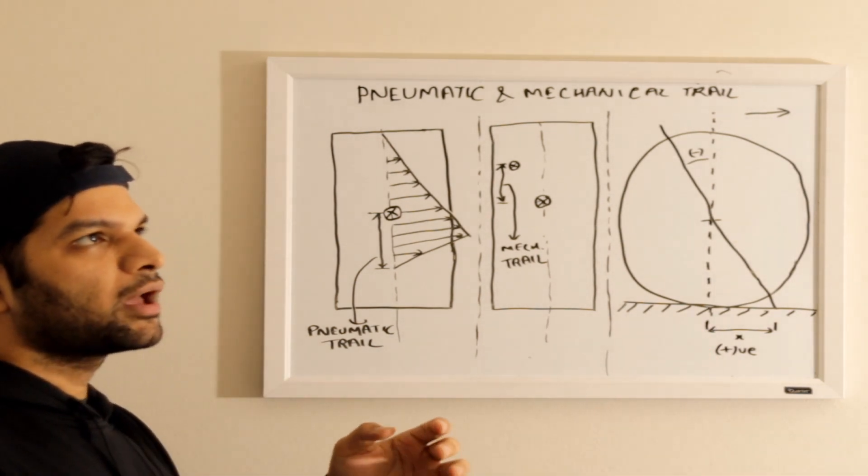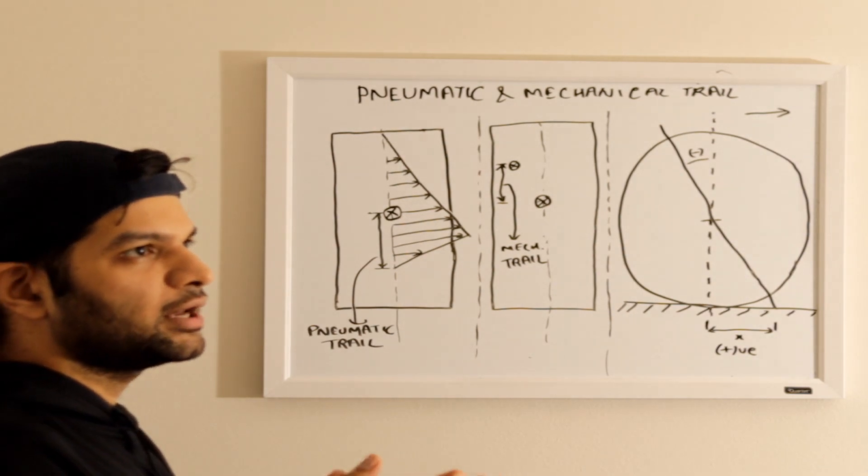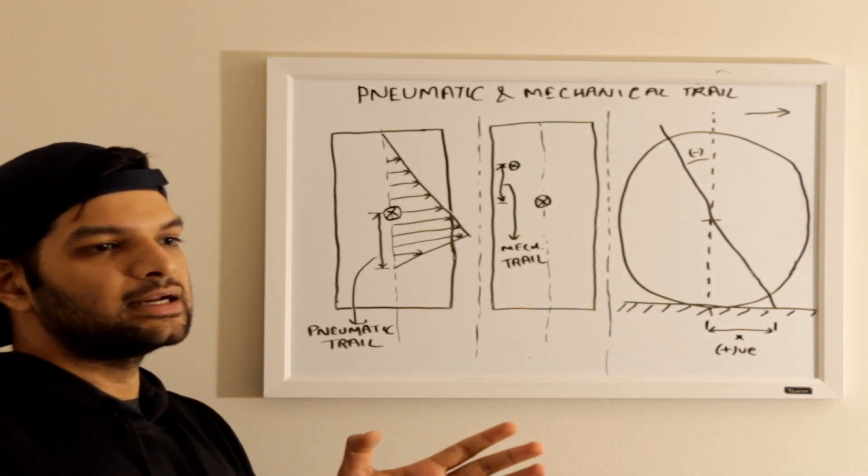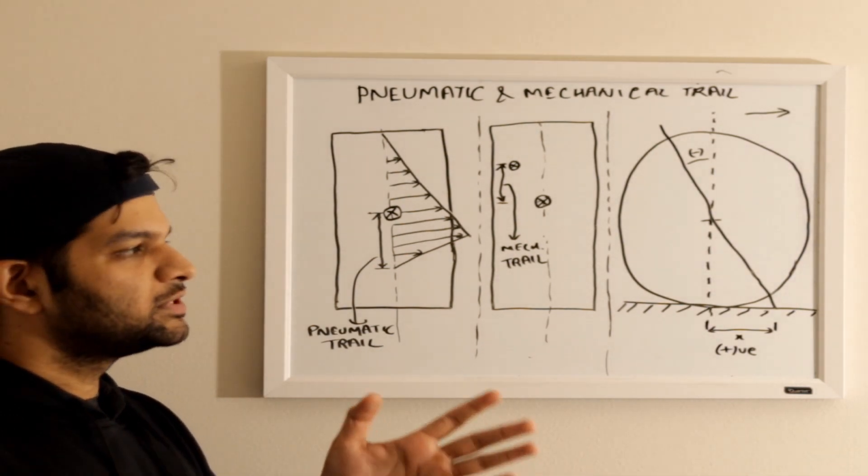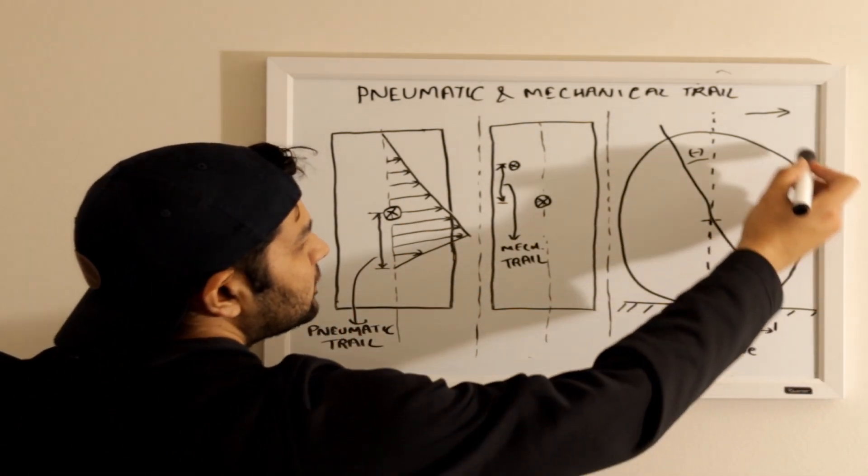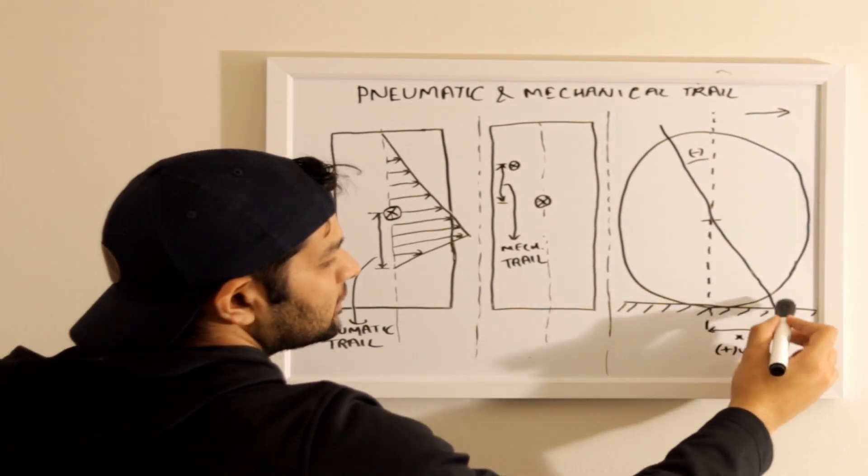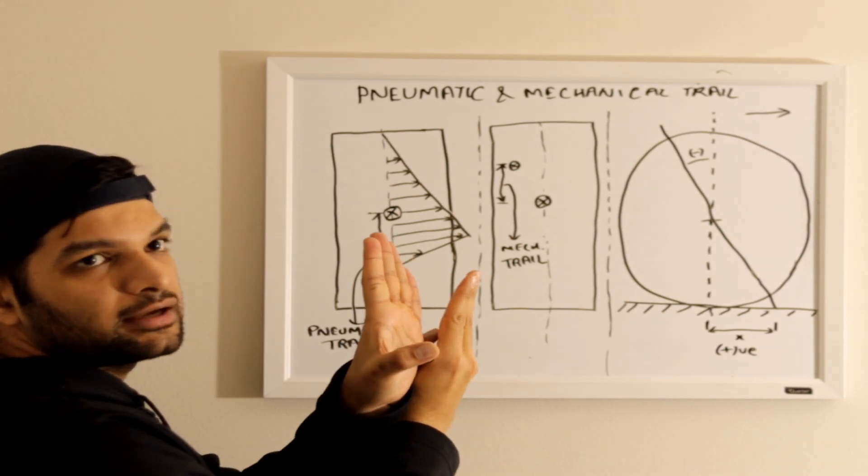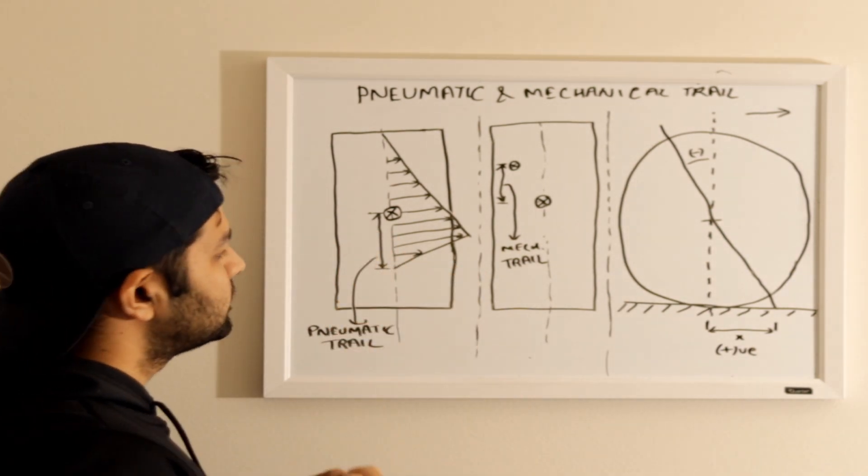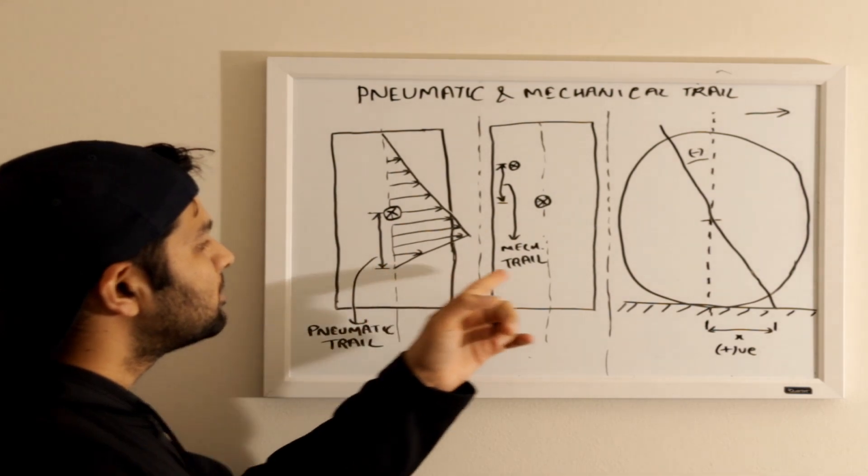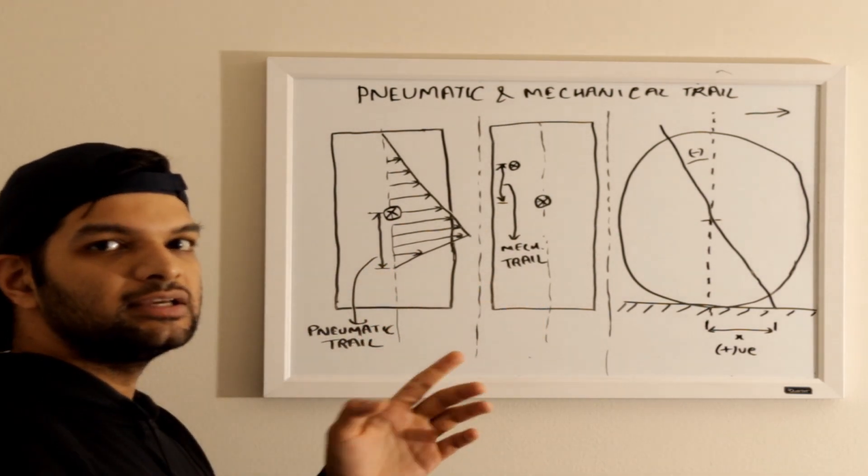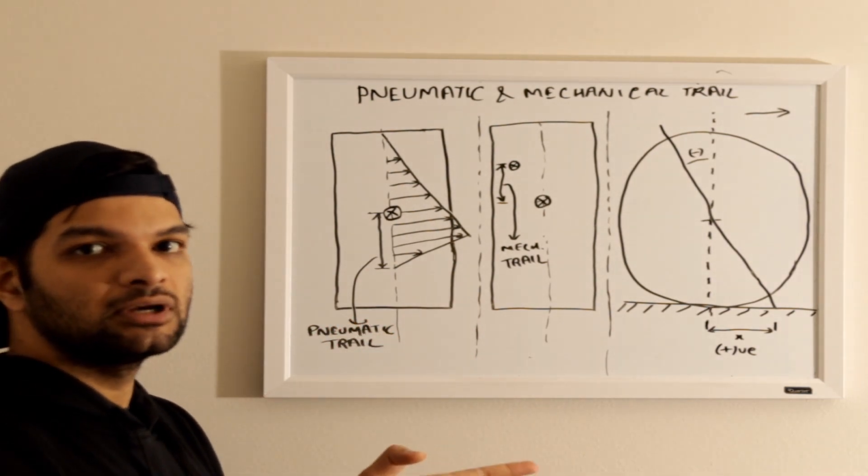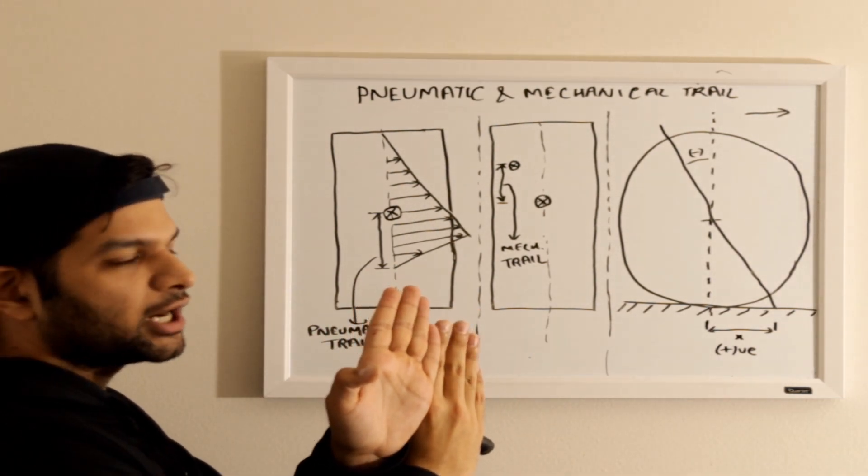So I always used to get confused about the term aligning moment. Aligning moment means the tendency or the torque acting on the tire which tends to align the entirety of the tire with the contact patch, because as we know there is a difference in the angle between the tire and the contact patch. So these two—the mechanical trail and the pneumatic trail—combinedly work to give us an aligning moment to align the tire with the contact patch.